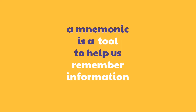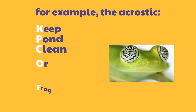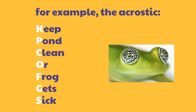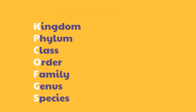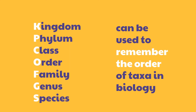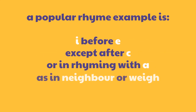A mnemonic is a tool to help us remember information. For example, the acrostic 'Keep Pond Clean Or Frog Get Sick' can be used to remember the order of taxa in biology. A popular rhyme example is 'I before E except after C, or in rhyming with A as in neighbour or way.'